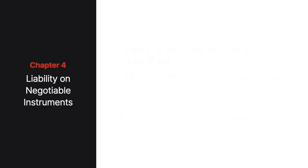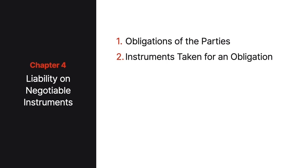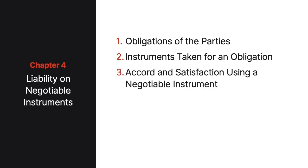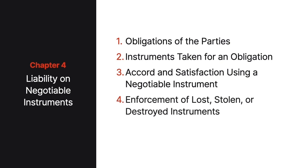Chapter 4 explores liability on negotiable instruments. The chapter begins with an overview of the parties' obligations. Then we'll learn about the impact of taking a negotiable instrument for an obligation. Next, we'll discuss the special rules that apply if a party tenders a negotiable instrument in full satisfaction of a claim. Then we'll cover the rules governing the enforcement of a lost, stolen, or destroyed instrument. And finally, we'll learn about warranty liability.